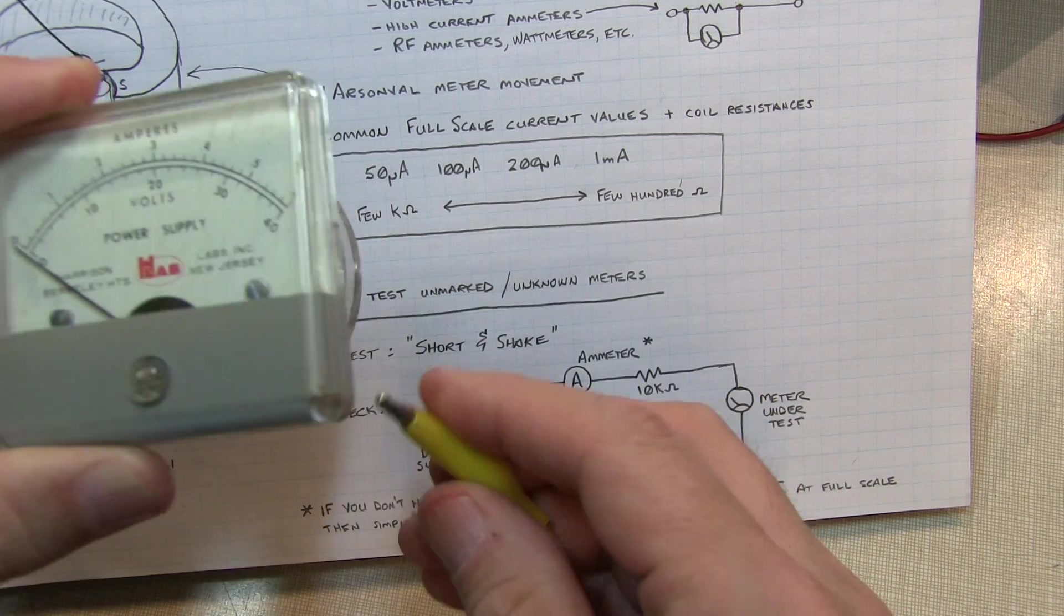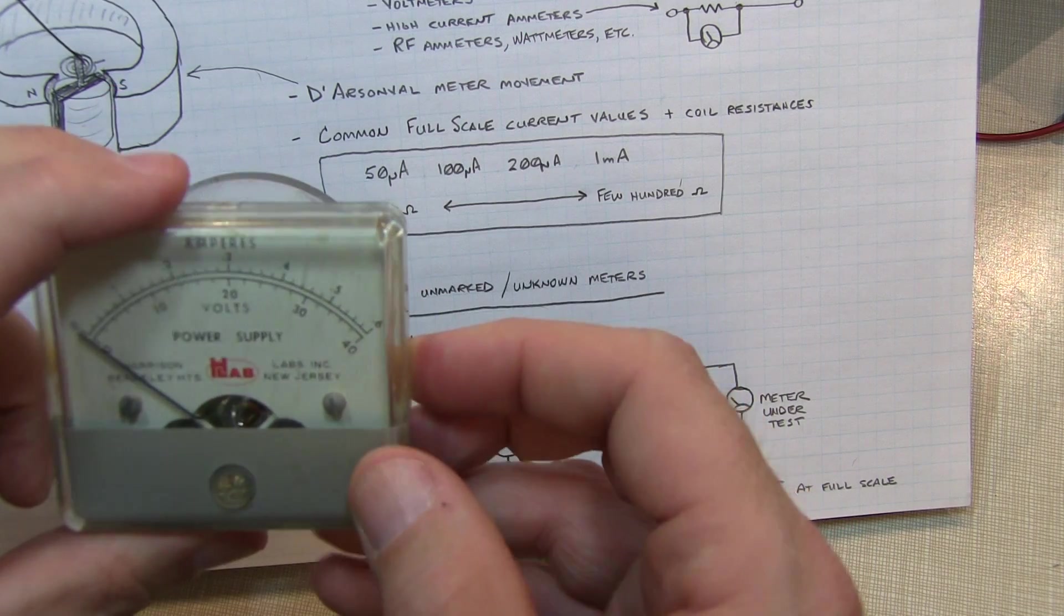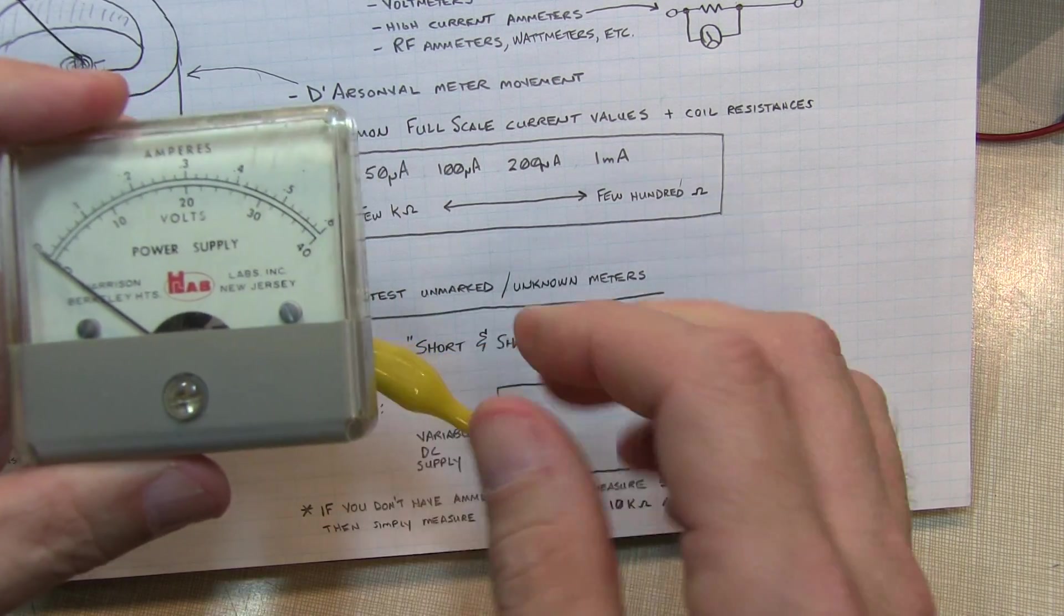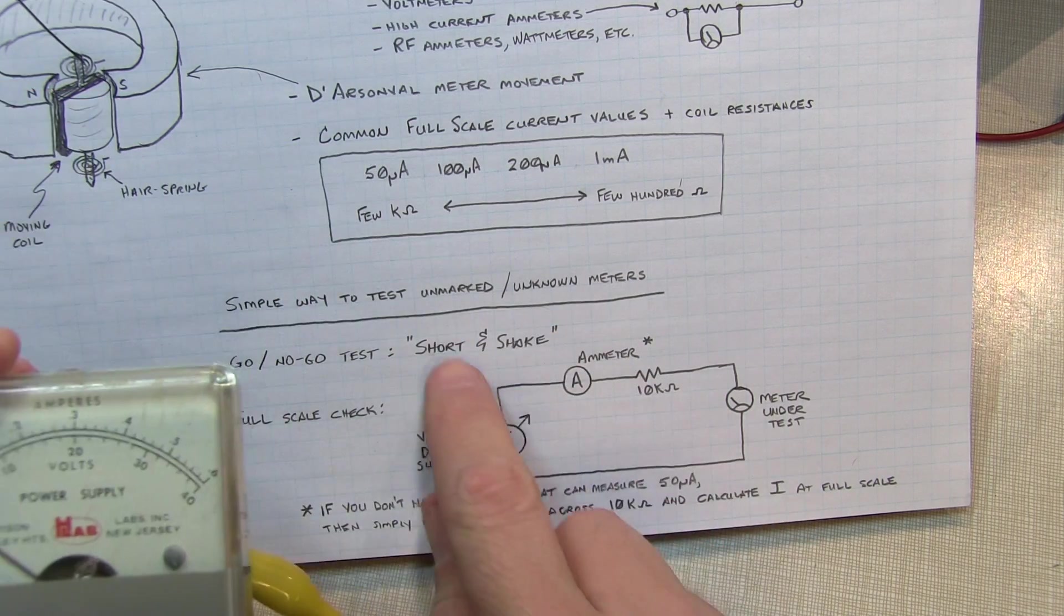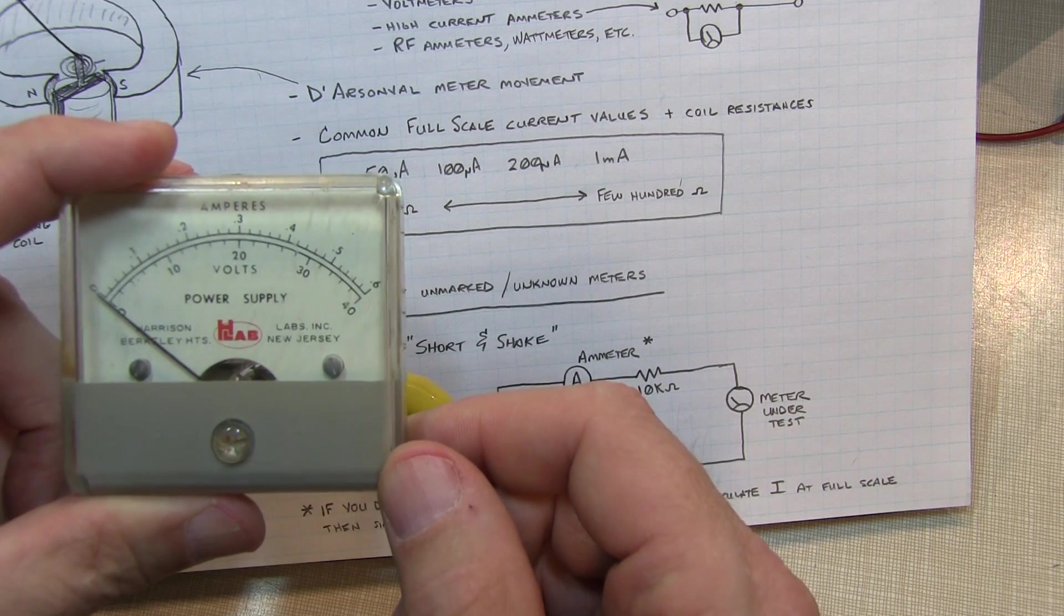And by shorting that generator out, the motion of the meter causes a back EMF, which keeps the meter kind of damped. So if the meter movement was the same, whether you're shorted or not, that might indicate that the coil itself is burned out or is open. So it's a real quick go-no-go test that you can still do before you lay your money down on a used meter to bring home and put into your project.